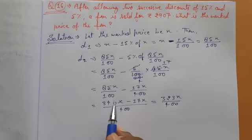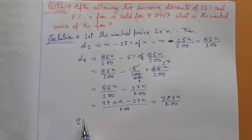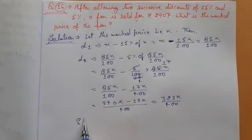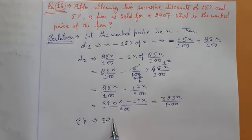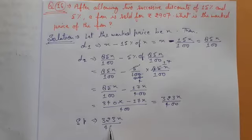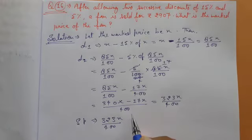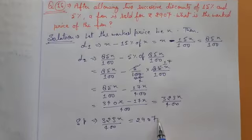After applying D2, the selling price will be SP equals 323X upon 400, that is equivalent to 2,907.